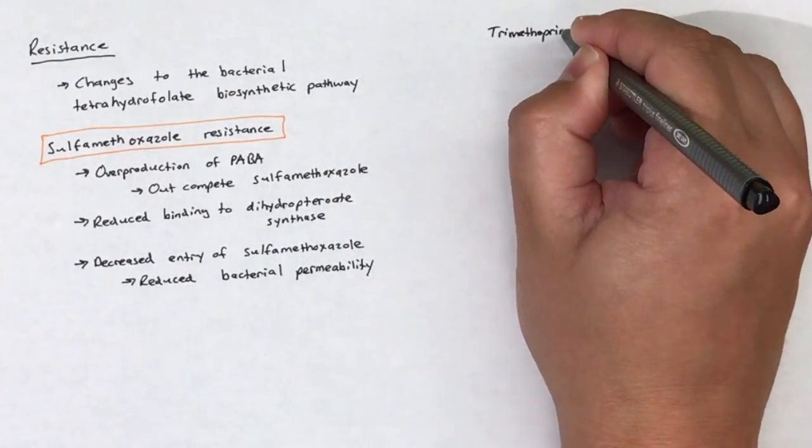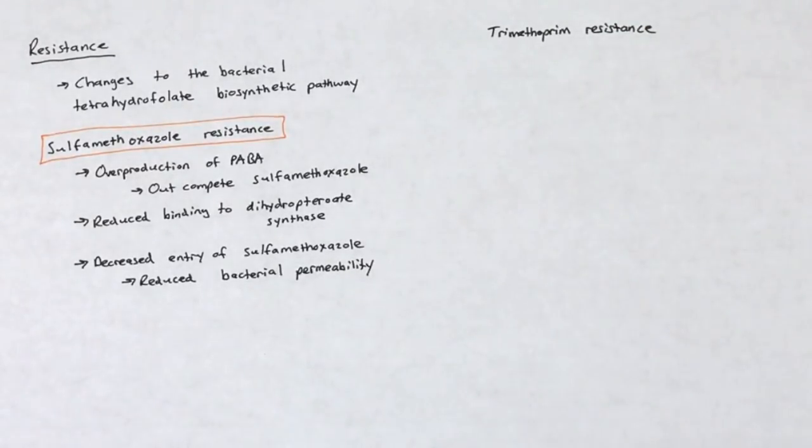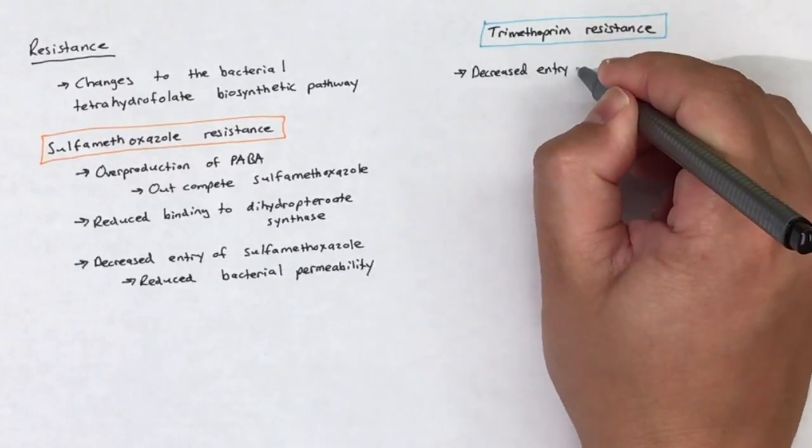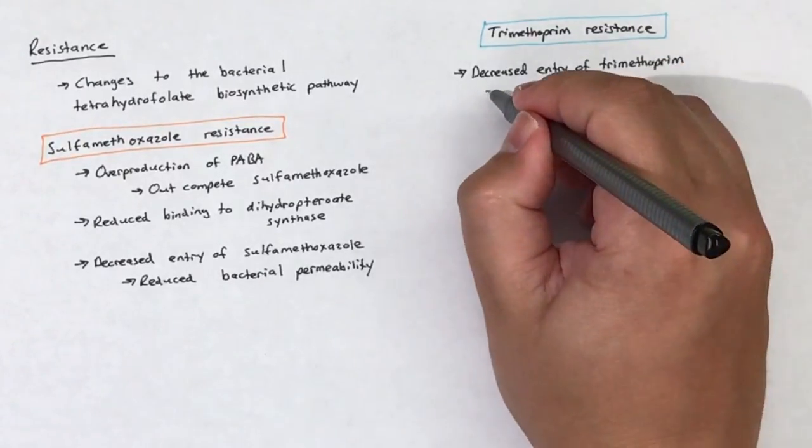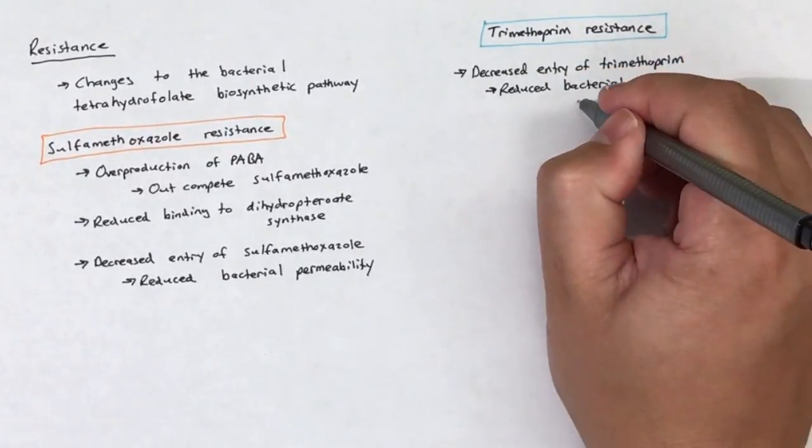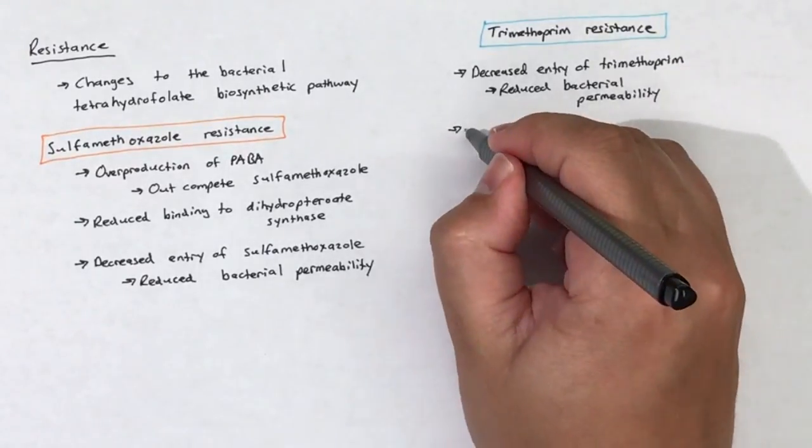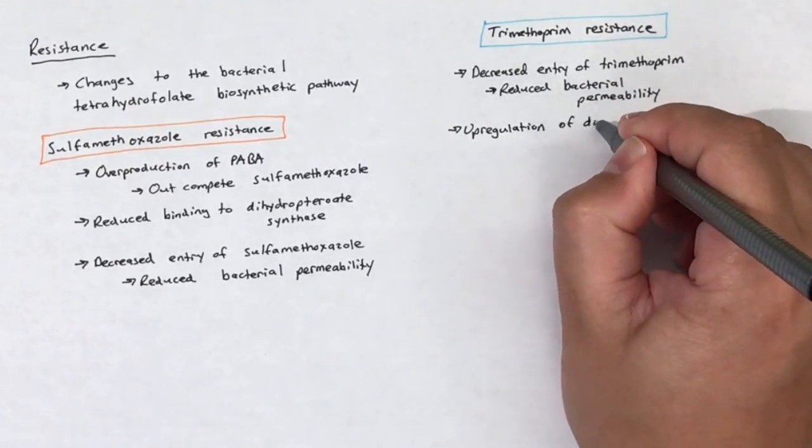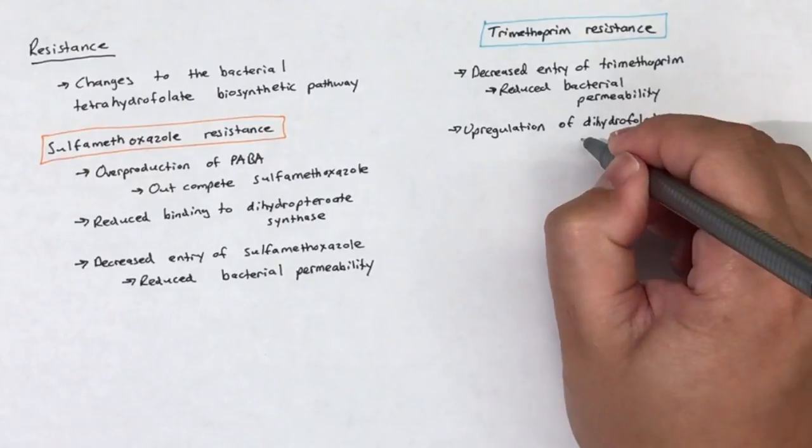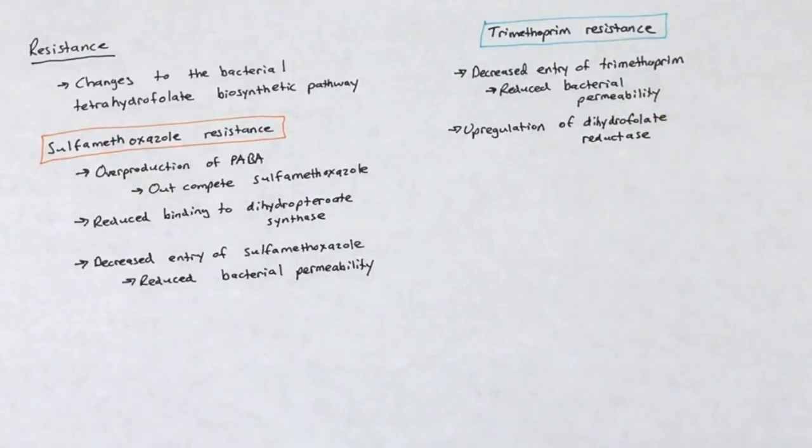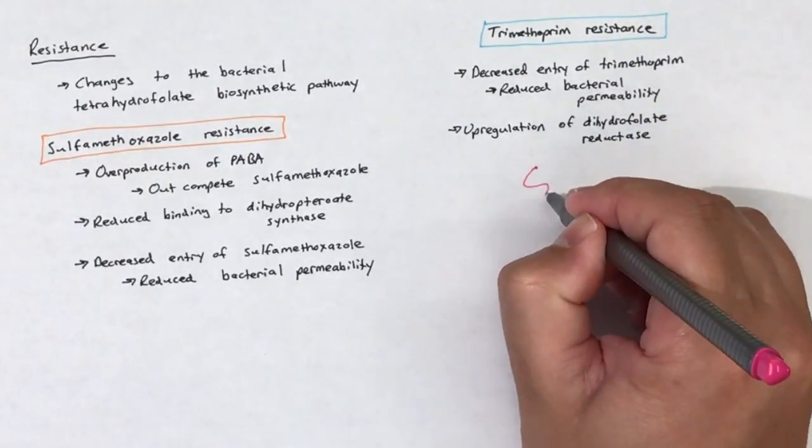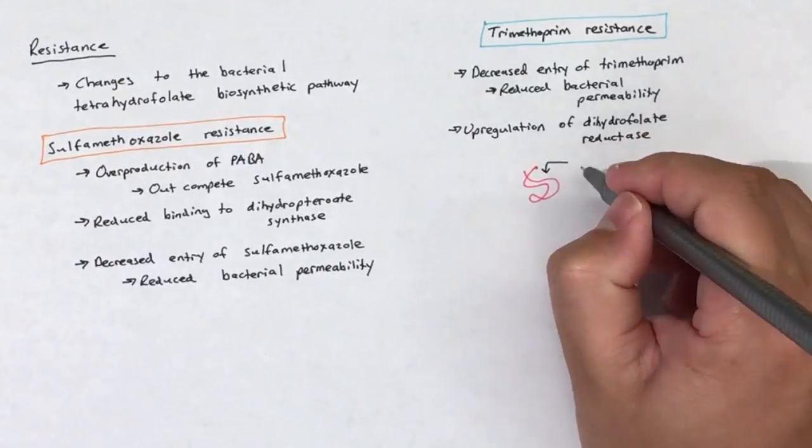Resistance to trimethoprim occurs in similar mechanisms as resistance to sulfamethoxazole. Similar to sulfamethoxazole, trimethoprim resistance can also occur due to reduced bacterial permeability. If trimethoprim cannot concentrate within the bacterial cell, then trimethoprim will not be able to effectively inhibit dihydrofolic reductase and resistance will develop.